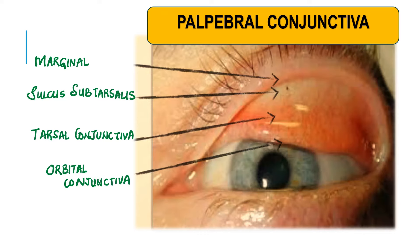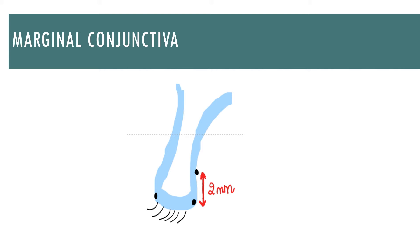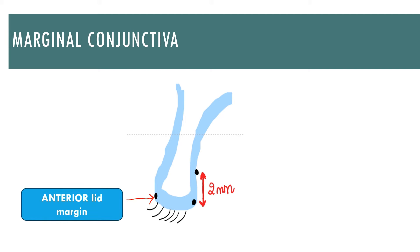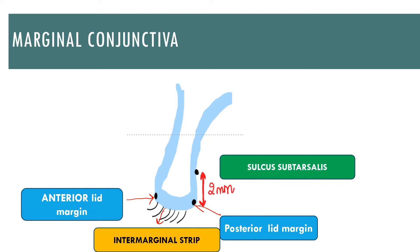The palpebral conjunctiva includes the marginal palpebral conjunctiva covering the margin of the eyelid, the sulcus subtarsalis, the tarsal conjunctiva covering the tarsus, and the orbital conjunctiva. In the diagram, the anterior lid margin and posterior lid margin are identified. The area between them is the intermarginal strip. Adding 2 mm above the lid margin gives the sulcus subtarsalis, and this entire area — intermarginal strip plus the distance from the posterior lid margin to the sulcus subtarsalis — is covered by the marginal conjunctiva.